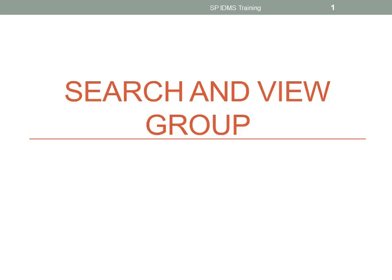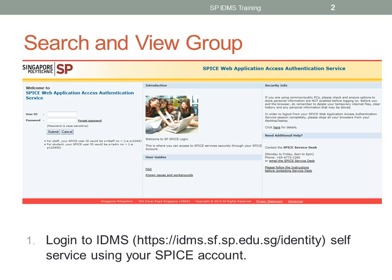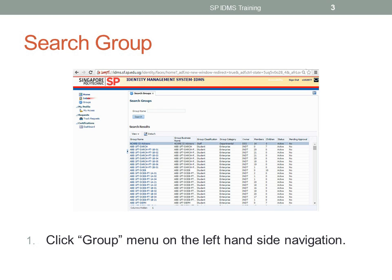This video gives a demonstration of how to search and view group details. To search and view the group, login to IDMS self-service using your Spice account. Click the group menu on the left hand side navigation.